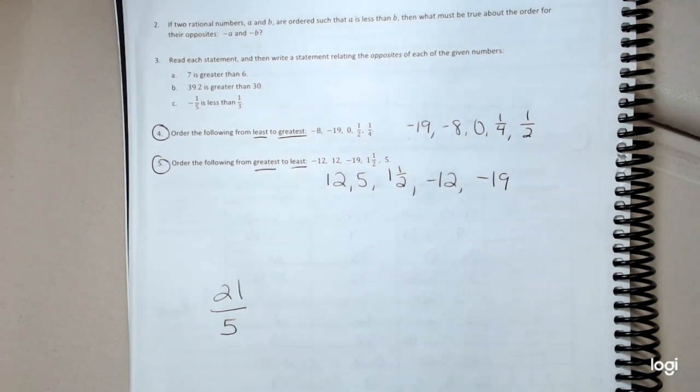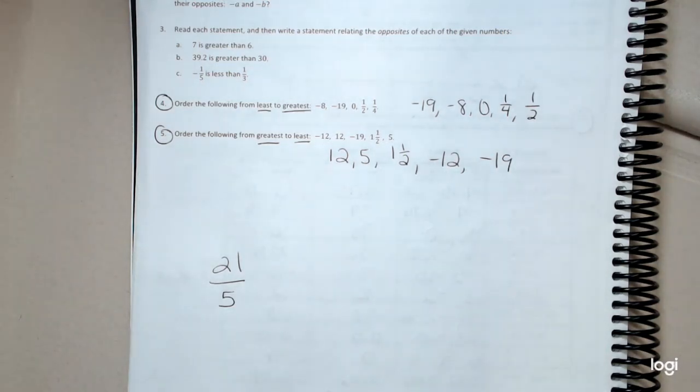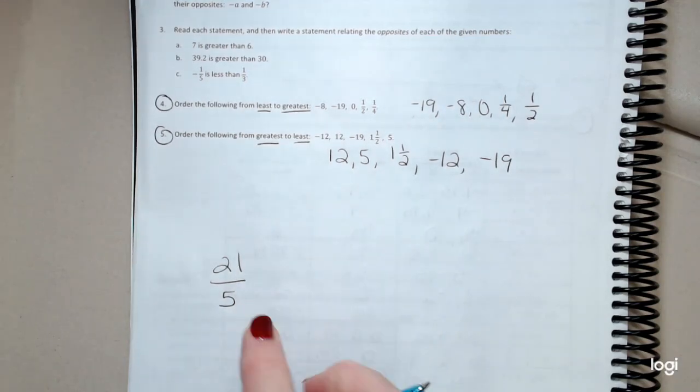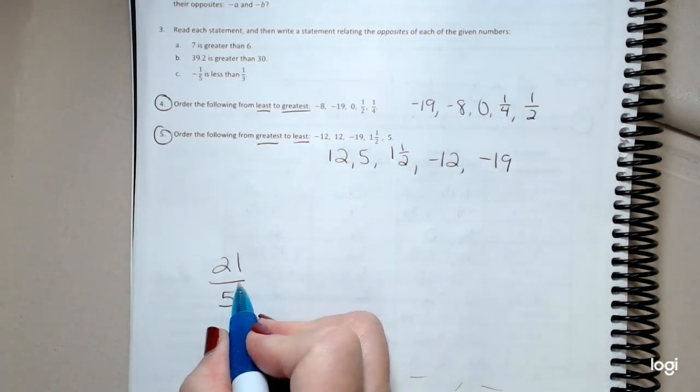My other suggestion is you might want to write this fraction down. This is a rational number, 21 over 5. You might have gone over a few of these things in class with your teacher yesterday. If not, let me show you. If you have 21 over 5, and you're trying to order some rational numbers, and you're not sure where to put 21 over 5, we're going to change this to a mixed number.